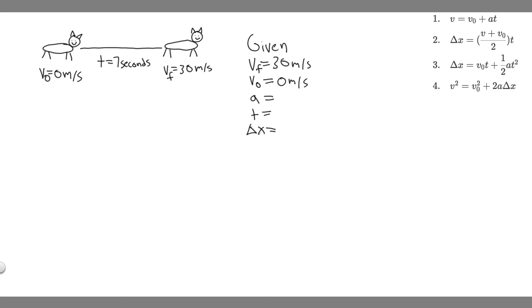The acceleration is what we're trying to solve for, so I'm just going to say a equals question mark. And then the time, how long it takes this interval, is 7 seconds, so we know t equals 7 seconds. And then delta x is just the change in position or how far it travels - we don't know that, so we're just going to say question mark, but we're not going to need it to solve the problem.